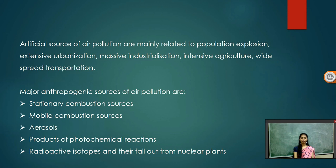Artificial sources of air pollution are mainly related to population explosion, extensive urbanization, massive industrialization, intensive agriculture, and widespread transportation. All these artificial sources are known as anthropogenic sources since they are manmade. Major anthropogenic sources include stationary combustion sources, which include gases released from households, industries, etc. These can contribute 10 to 15% of air pollution.